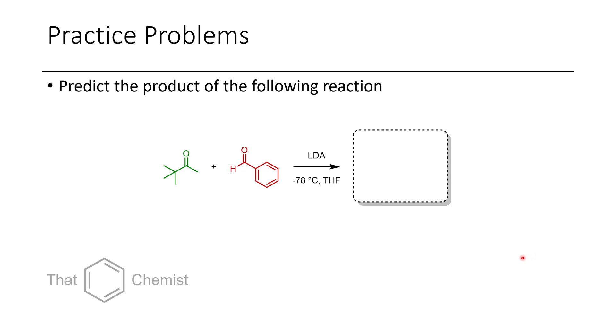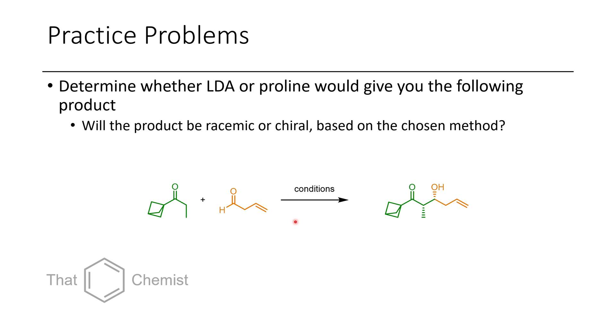For this lecture, I'd like to assign two practice problems. The first is the same problem from last lecture — predict the product using LDA instead of sodium hydroxide or sodium methoxide. The second involves a ketone and an aldehyde: which conditions will afford the syn-methyl-syn-hydroxy product, and will that product be racemic or chiral? I hope this has been a useful lecture on aldol addition reactions with proline and lithium enolates. Next lecture, I'll probably cover boron-aldol and Mukaiyama-aldol reactions. If you have any questions, please leave them in the comments. Thank you, and have a great day.